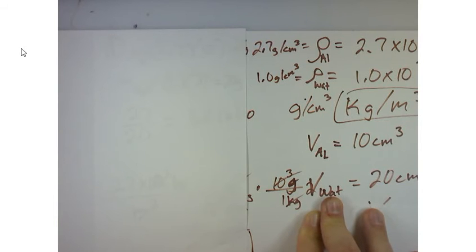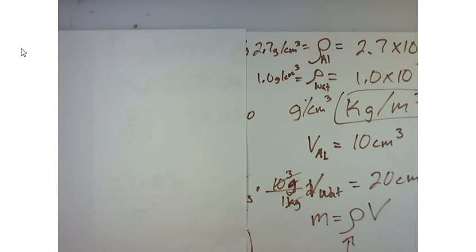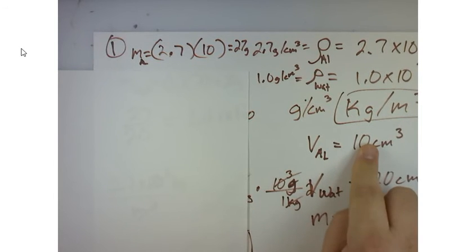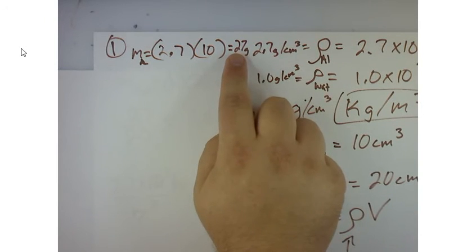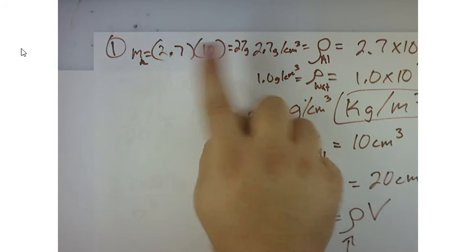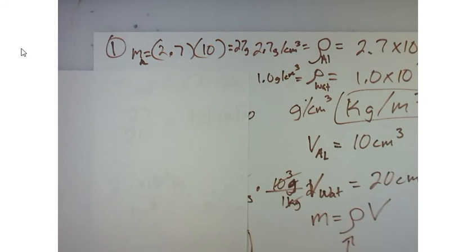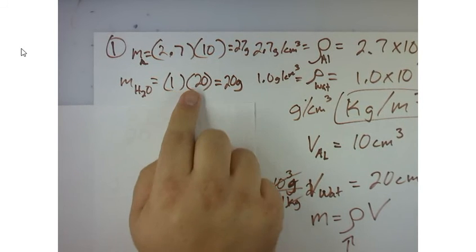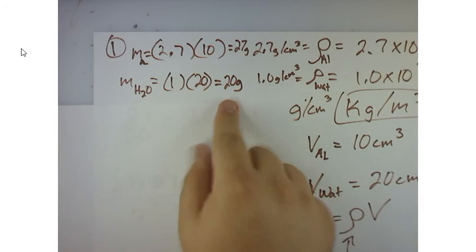Now, in order to find the mass, remember that the mass is the density times the volume. So the mass for aluminum is going to be the 2.7 times the volume of the aluminum, which was 10 centimeters cubed. When I multiply it out, the mass ends up becoming 27 grams because 2.7 times 10 is 27. That's for the aluminum. Now when I do the same thing for the water, I've got a density of 1 times the volume, which is 20, so I get 20 grams.